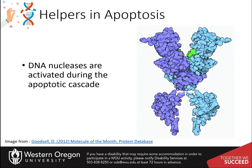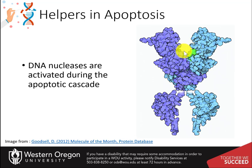Caspases are designed to break proteins into bite-sized pieces, but the cell needs help to break down its other molecules. Cells also have a number of caspase-activated proteins to do this work. The one shown here is a caspase-activated deoxyribonuclease. During apoptosis, the caspase breaks up an inhibitory protein that binds to the two large domains at the bottom, creating the active form. DNA slides into the large groove at the top, and the active site amino acids, shown here in green, clip it into small pieces.